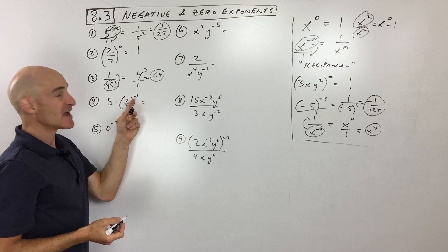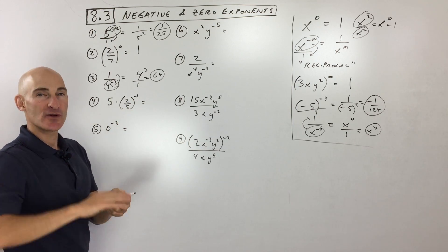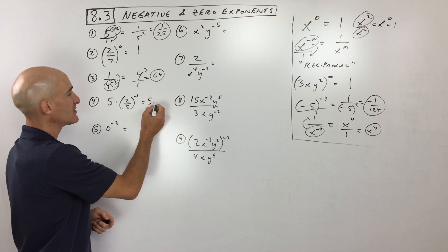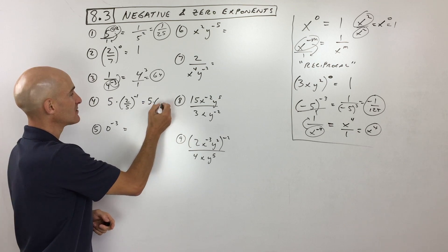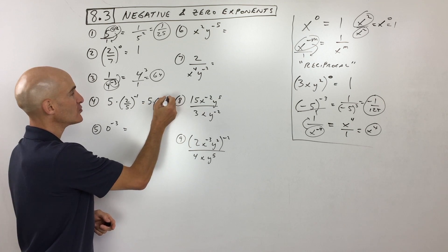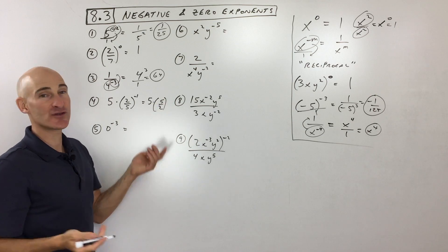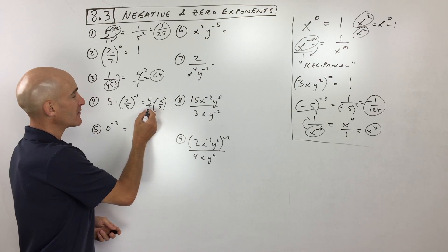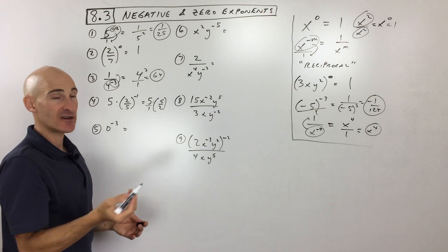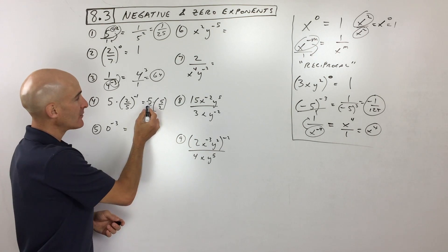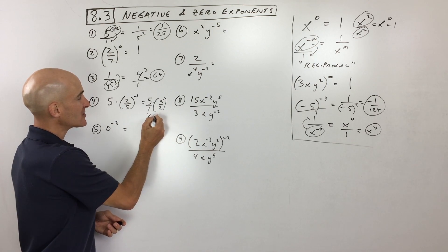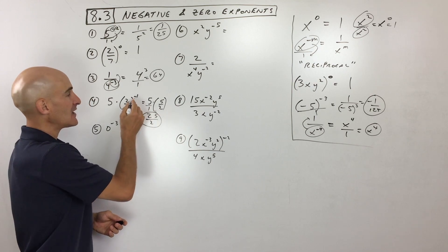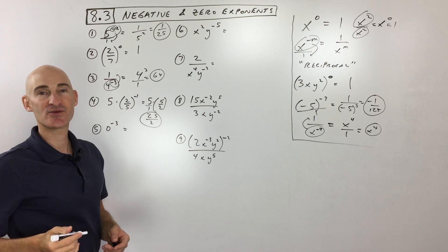Number 4: you see the negative exponent — the negative exponent takes the reciprocal. So we can think of this as 5 times 5 over 2 to the positive 1. Anything to the first power is itself. Think of this 5 as 5 over 1, multiply numerators and denominators together, and we get 25 over 2.